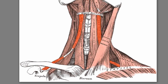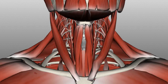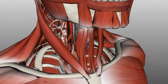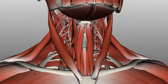The omohyoid lies lateral to the sternohyoid. Coming back to the 3D model, the position of the omohyoid would be lateral to the sternohyoid. It inserts here on the hyoid bone and runs inferiorly and posteriorly to insert onto the scapula. So it runs up through the posterior triangle and into the anterior triangle to insert onto the hyoid bone, and it fixes and depresses the hyoid bone.